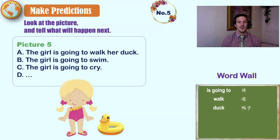Five, is going to walk duck. The girl is going to walk her duck. The girl is going to swim. The girl is going to cry. The girl is going to dance. I see a girl in a bathing suit and a rubber duck. The girl is going to swim.